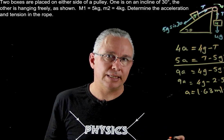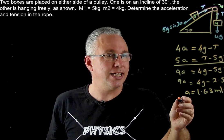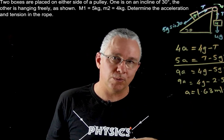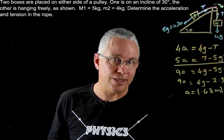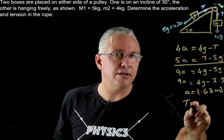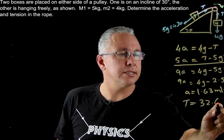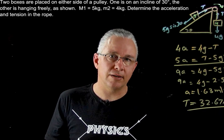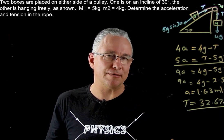Of course it's now simply a task of just substituting our acceleration into one of these formulas here to work out T and I'm going to get you to do that yourself. It's fairly straightforward but if you do it correctly you're going to get a T value equal to 32.67 newtons. And there is our incline problem. Take care, bye for now.